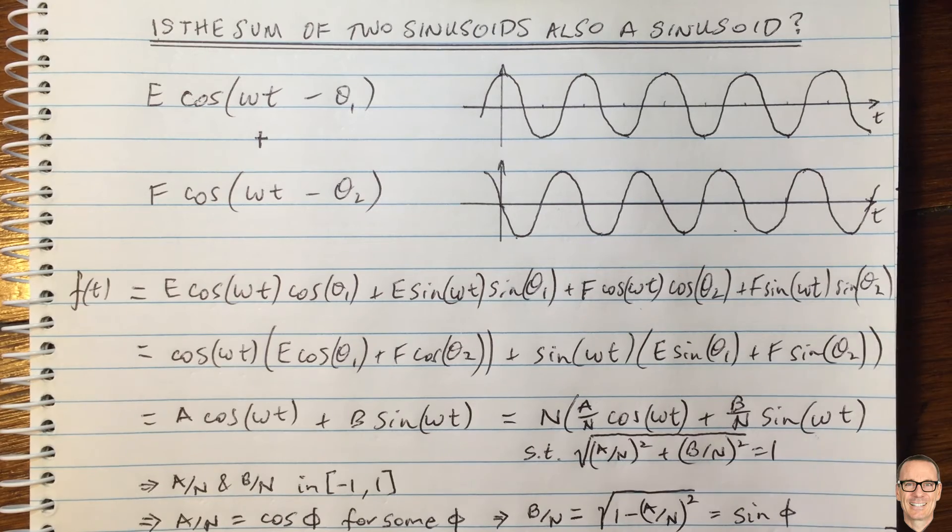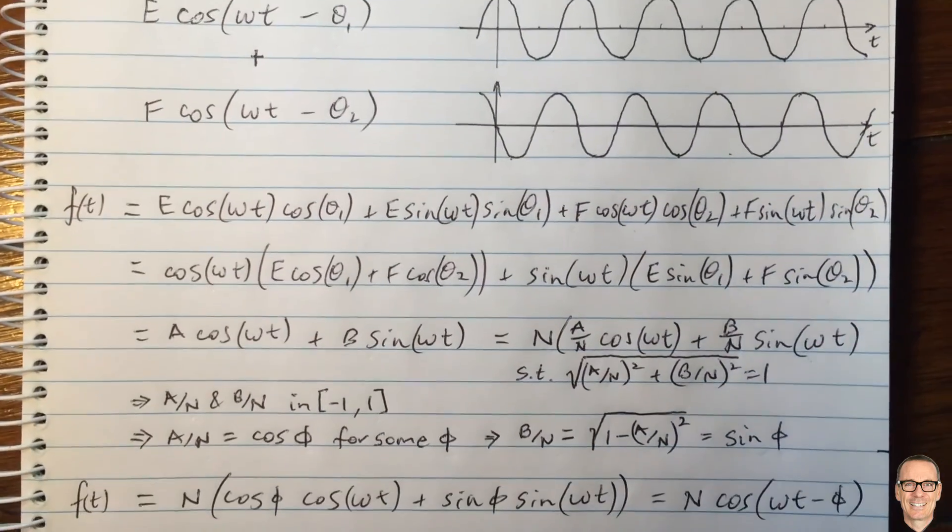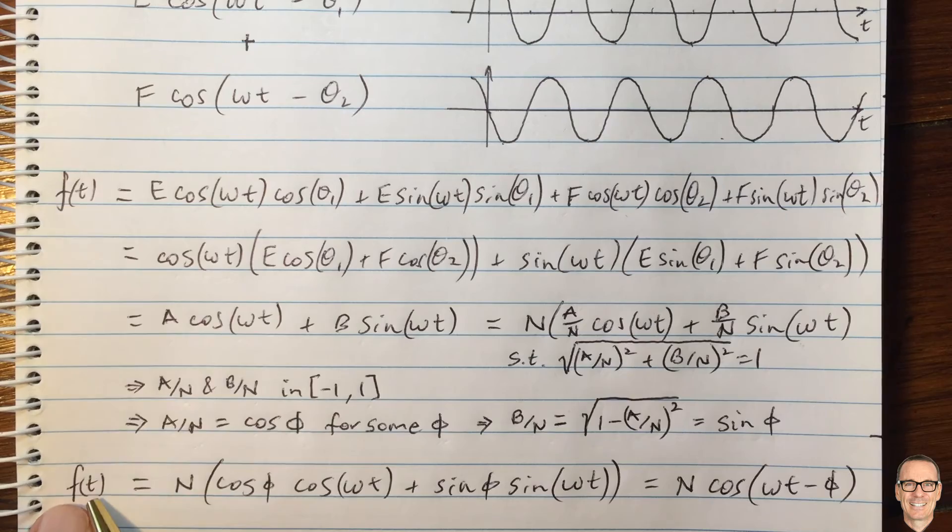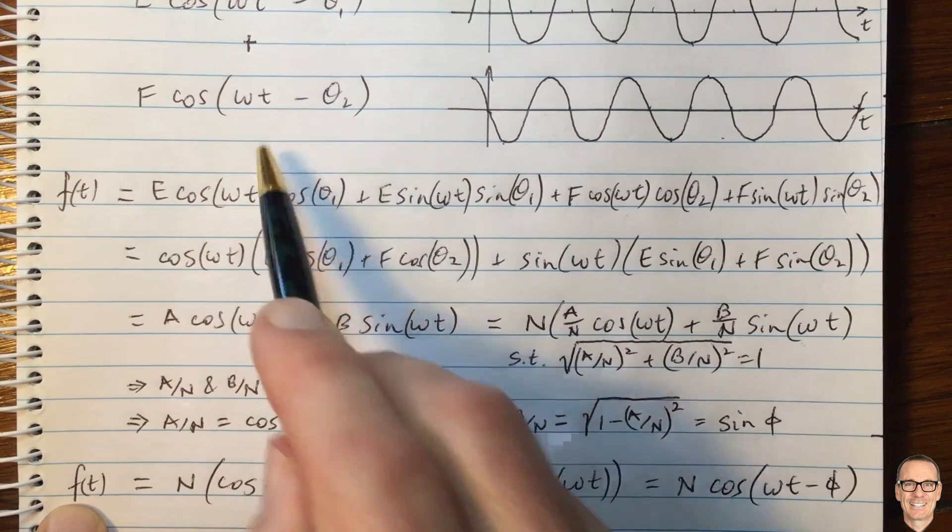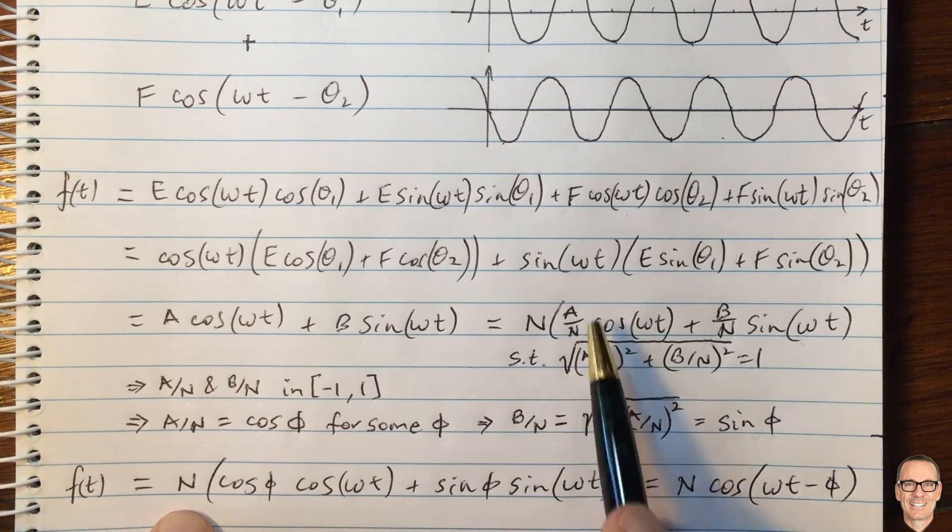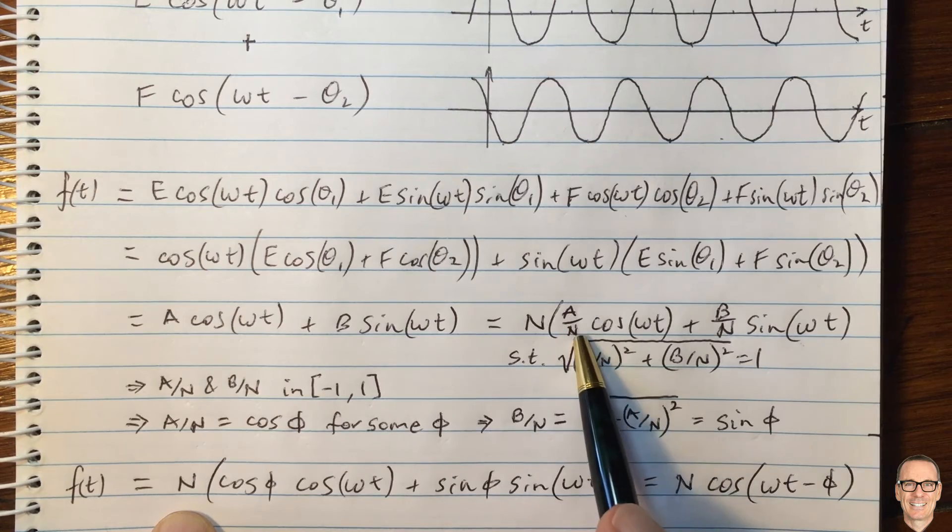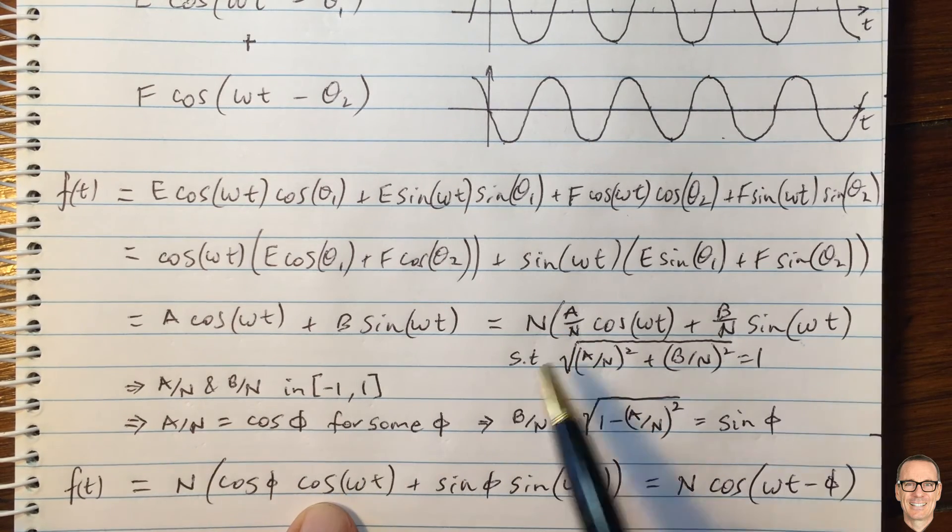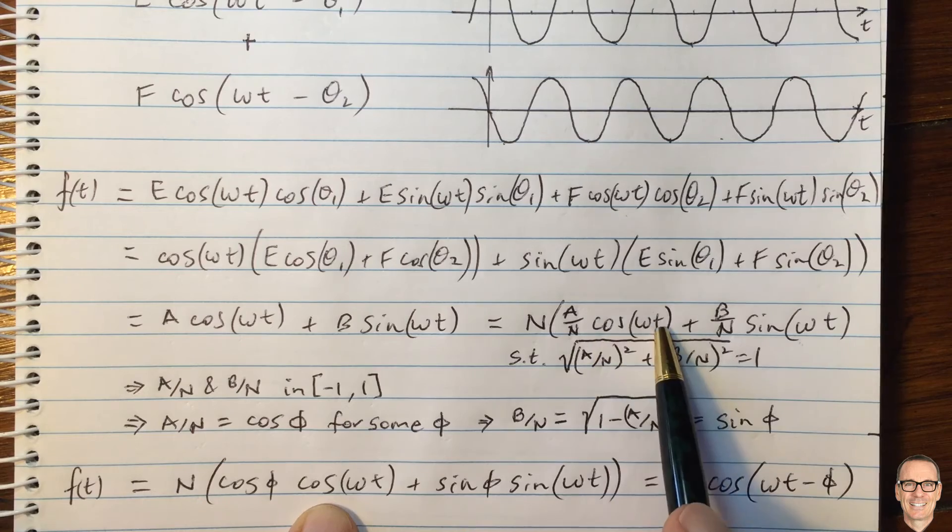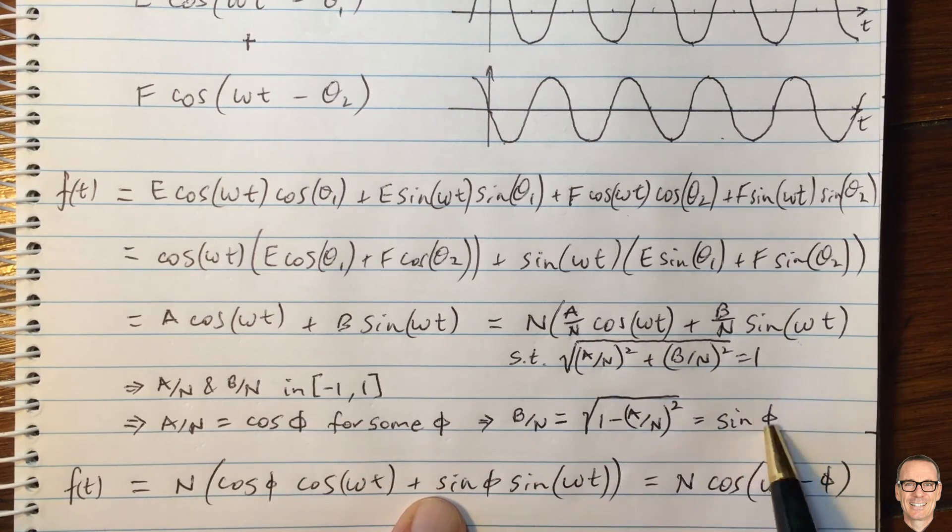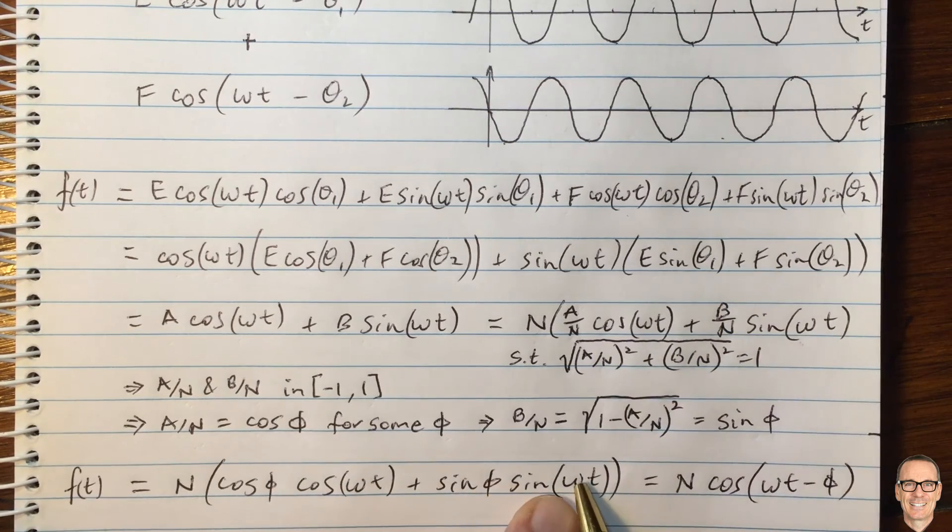So now we can write those as substituting them back in. We see that our function, which is the addition of these two, is N. So this is over here, N. We were substituting A on N for cos of phi in here. So we've got cos of phi times cos omega t plus the sine of phi for B on N sine omega t.